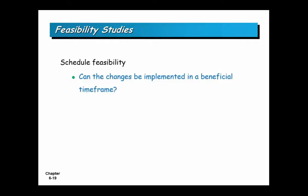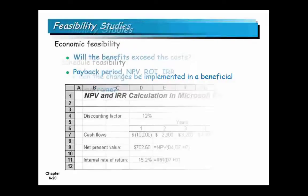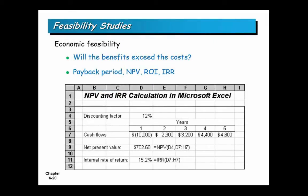Schedule feasibility asks: can you implement it in a timeframe where you'll actually get value from it? If you need something in six months but your plan takes six years, why bother — by the time you're done, it'll be yesterday's news. And economic feasibility — the most important — asks: will the benefits exceed the cost? Approaches include payback period, net present value, return on investment, and internal rate of return.